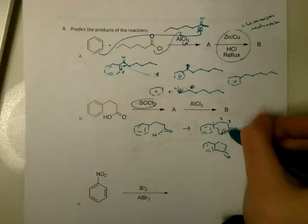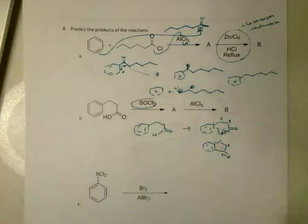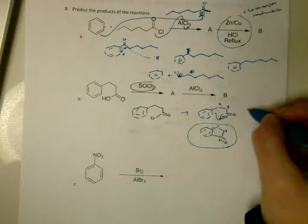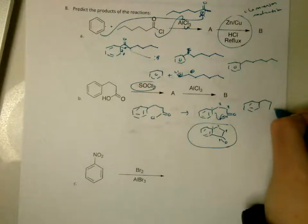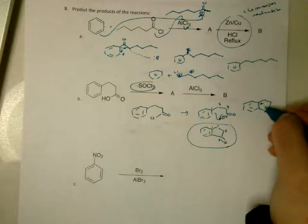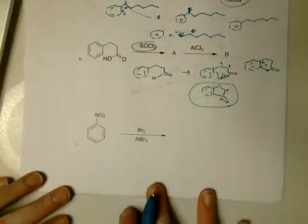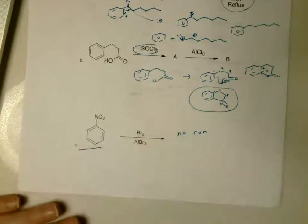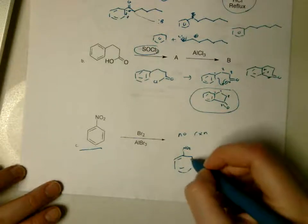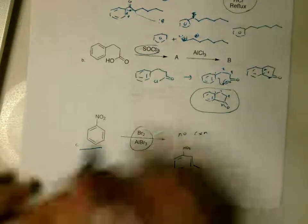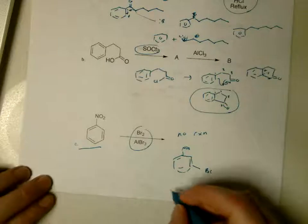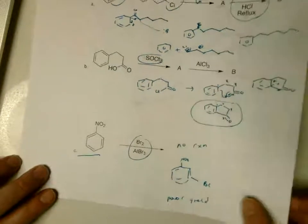The benzene attacks the electrophile, a positive charge forms, and aromaticity is restored. Let's count carbons — 1, 2, 3, 4, 5 — good. For the next one, I would say this is essentially no reaction because the nitro group is so deactivating, but if it did react, nitro is a meta director, so substitution would happen at the meta position. With a halogen and a Lewis acid, it would be halogenation, giving bromine at the meta position, but in very poor yield.